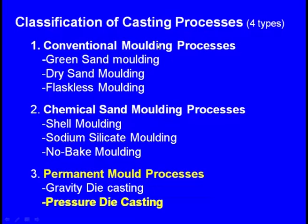Today we have seen the overview of different casting processes. We covered the conventional molding process — green sand molding, dry sand molding, and flaskless molding. In the chemical sand molding category we saw shell molding, sodium silicate molding, and no bake molding. In the permanent molding process, we learned that the mold is a permanent metallic one used for making hundreds and thousands of castings, with two types: gravity die casting and pressure die casting. In the next class we will see the overview of the special casting processes. Thank you.